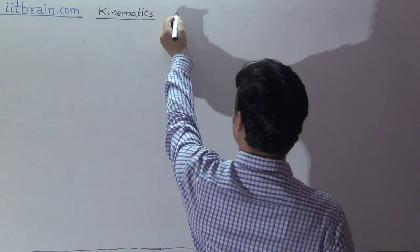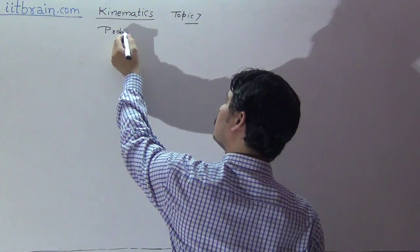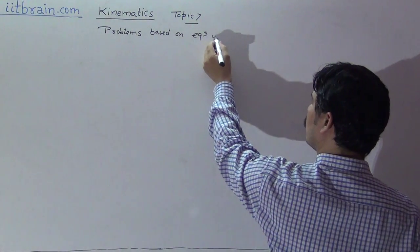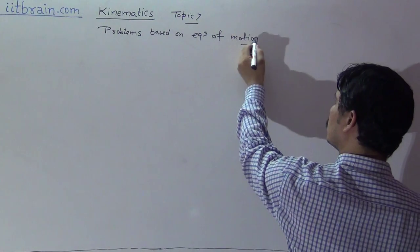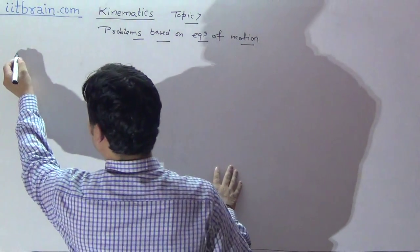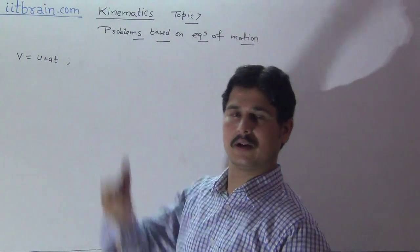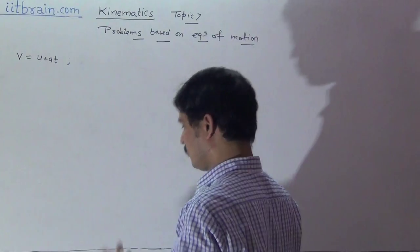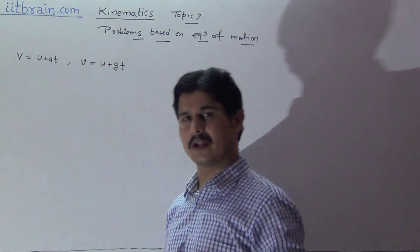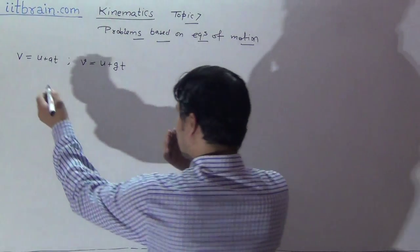Hello students, this is Topic 7. This topic contains problems based on equations of motion. We will discuss problems affiliated to all four equations. First is v equal to u plus at. For vertical motion under gravity, the equation becomes v equal to u plus gt. Upward direction is taken as minus g and downward as plus g.